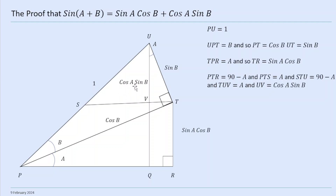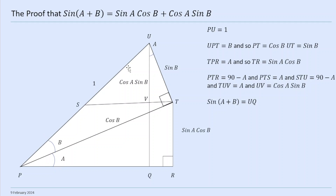We know this is sin(b), so because this angle is a, that means UV = cos(a)sin(b). Now here's the good news: this angle here is a+b, and PU is one, so UQ is sin(a+b). UQ is made up of VQ and UV. VQ is the same as TR, which is sin(a)cos(b), and UV is cos(a)sin(b). So that tells us that sin(a+b) = sin(a)cos(b) + cos(a)sin(b). Hooray!